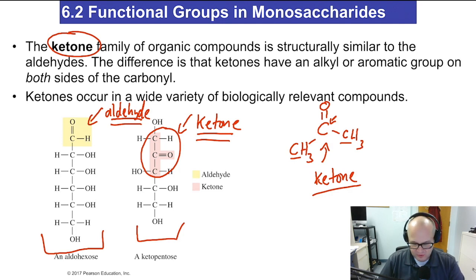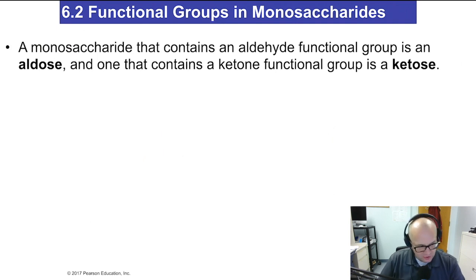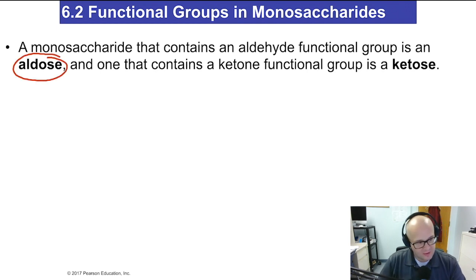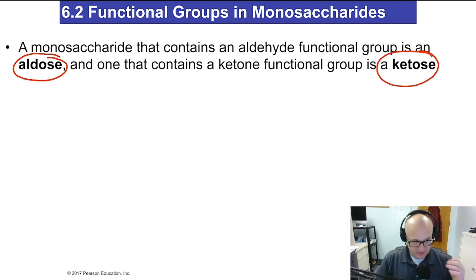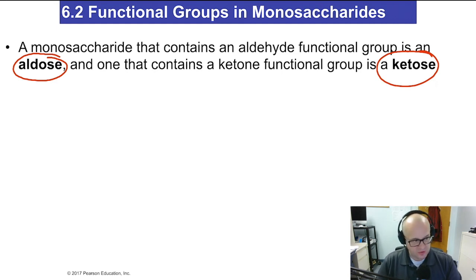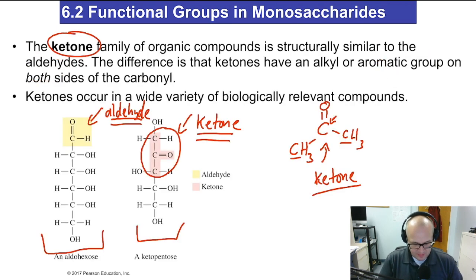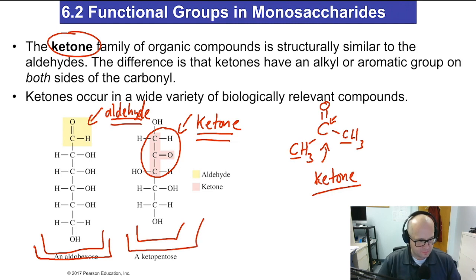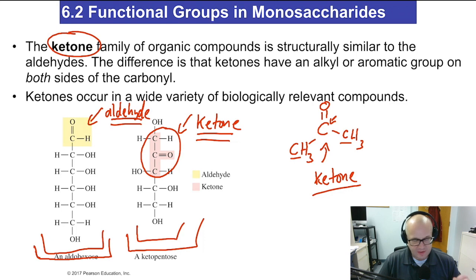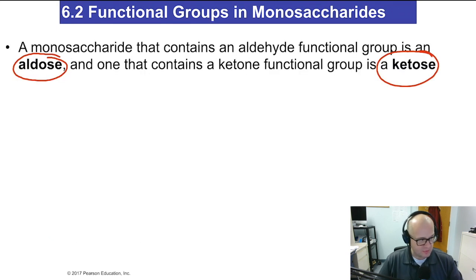We don't call them aldehyde and ketone sugars — we have other names for them. Aldose means aldehyde-containing; ketose means ketone-containing. It's easy to remember: aldehyde starts with 'a,' aldose starts with 'a'; ketone starts with 'k,' ketose starts with 'k.' So an aldehyde-containing sugar is called an aldose, and a ketone-containing sugar is called a ketose.